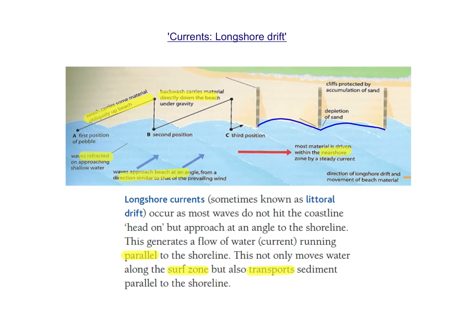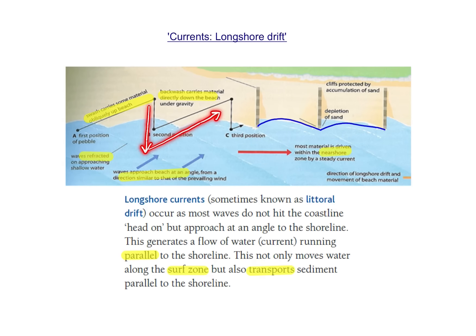Longshore drift is an important process of transportation. If the prevailing wind approaches the beach at an angle, it pushes the wave up the beach at an angle. That sediment is then dragged back out to sea, picked up by the prevailing wind and waves again, and pushed back up the beach before being dragged back out. That zigzag movement of sediment is what we call longshore drift.